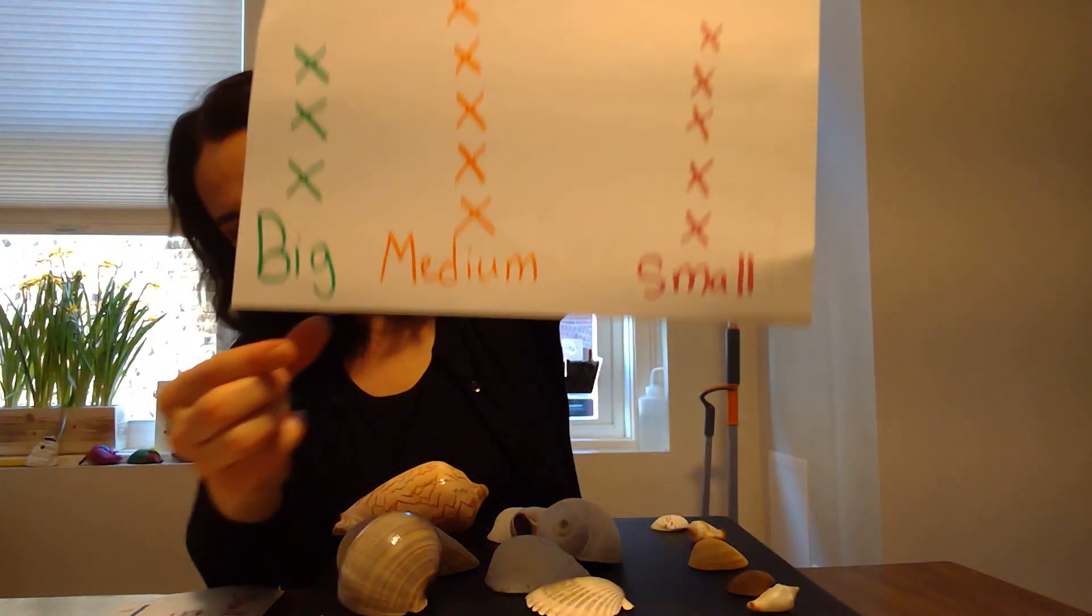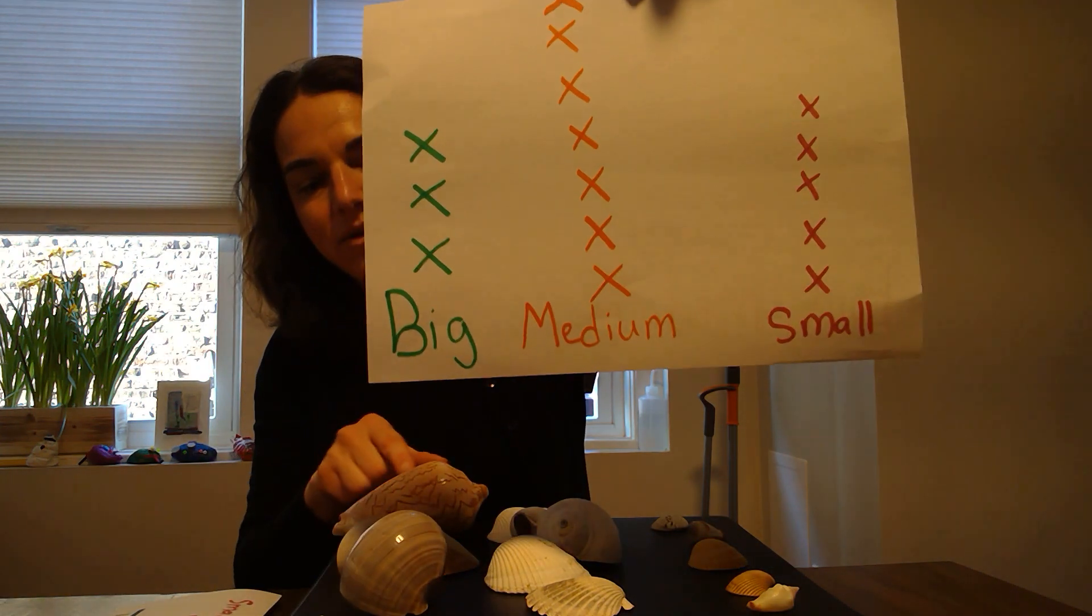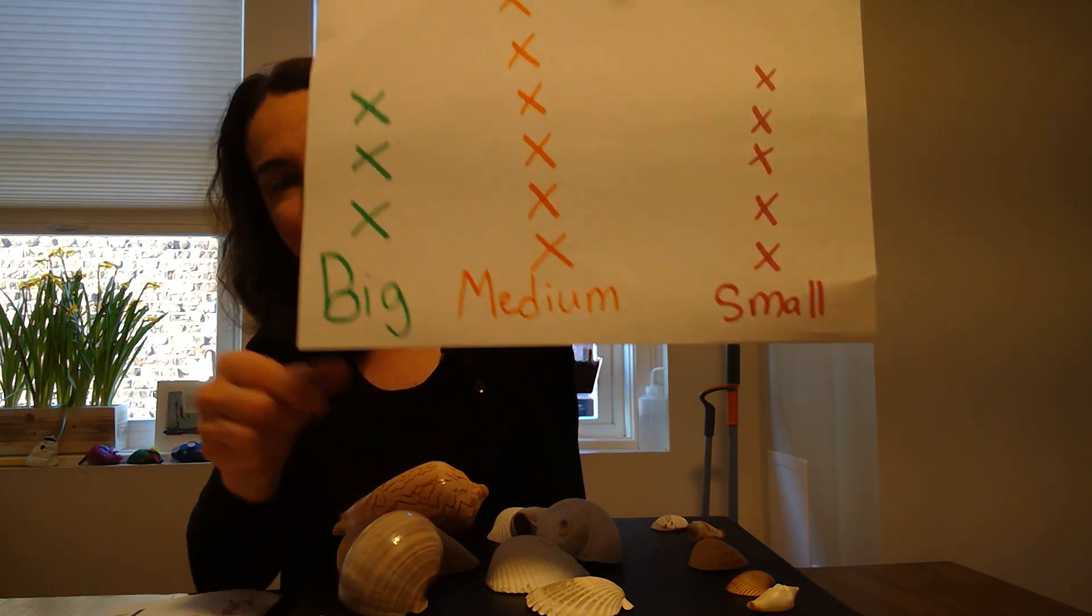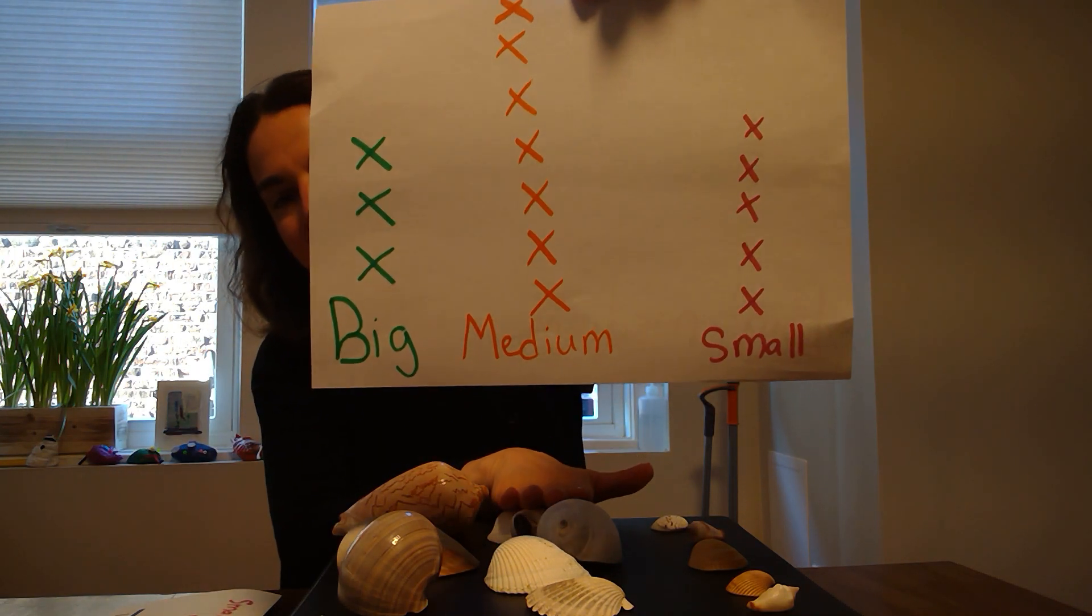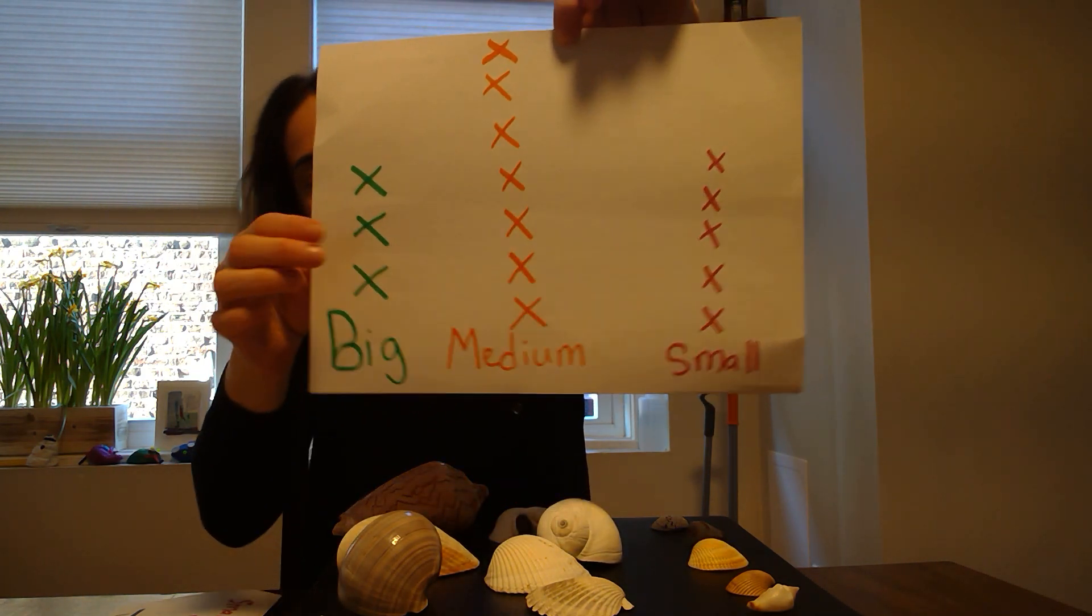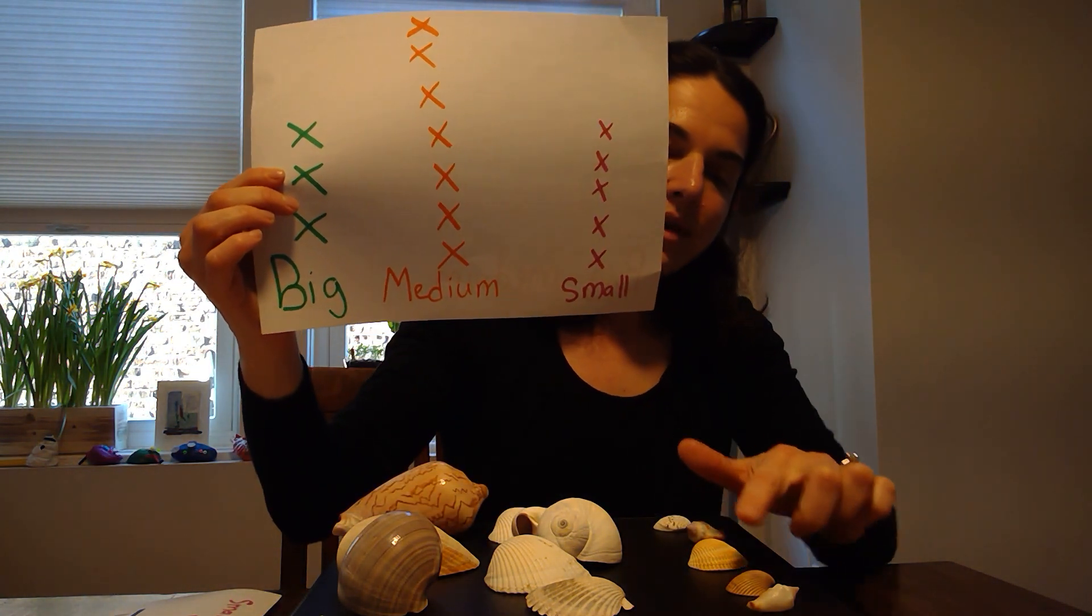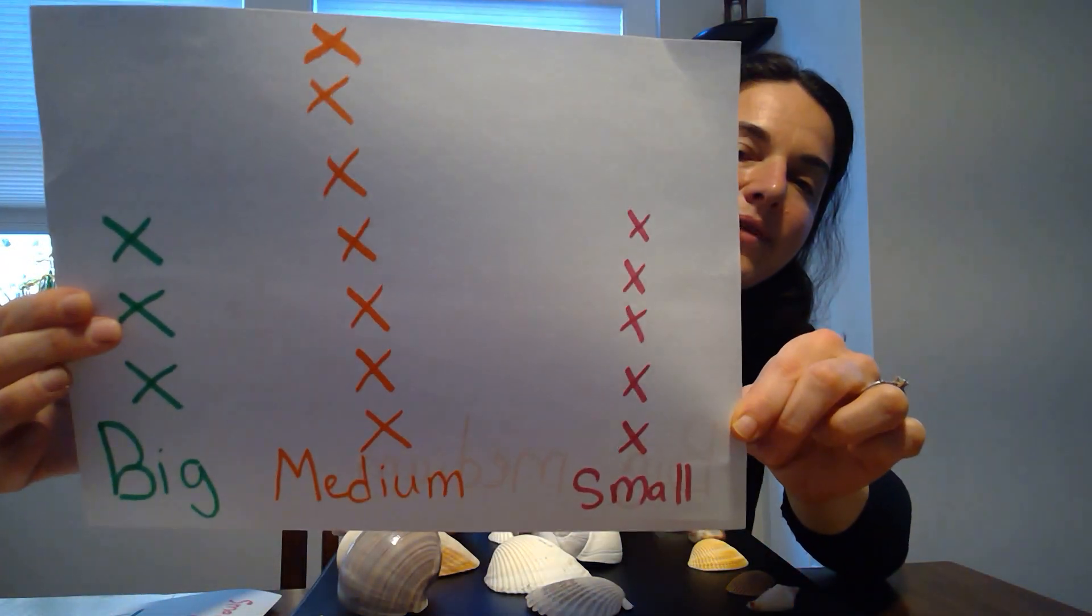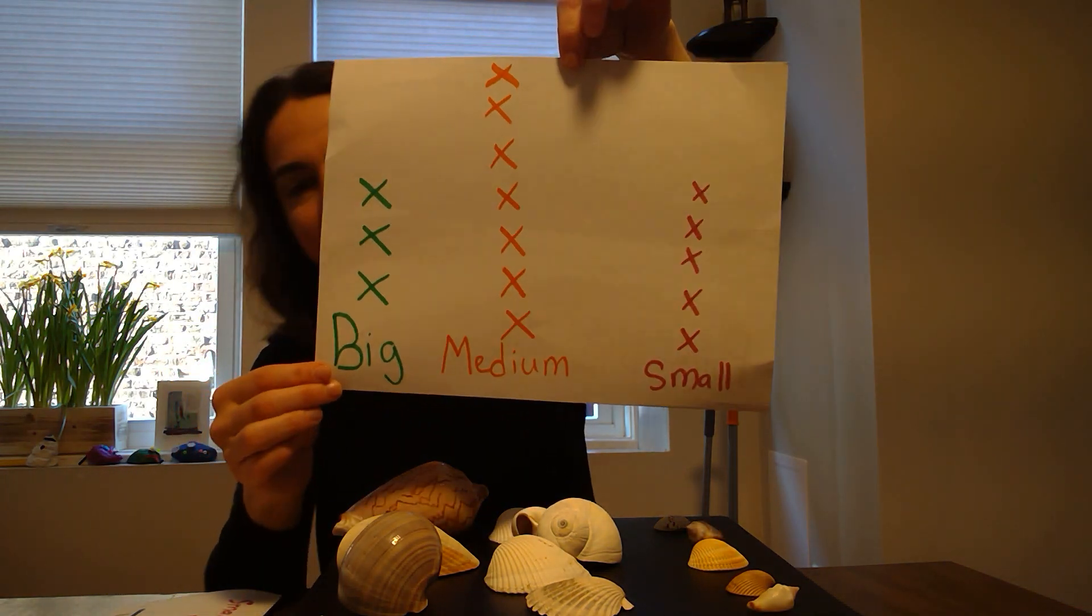Then to organize my data, I made a graph. I wrote big, medium, and small. In my biggest group I have one, two, three. So I drew three x's. One, two, three. In my medium-sized shell group, I have seven. So I drew seven x's. And in my group with my smallest shells, I have one, two, three, four, five. So I drew five x's.